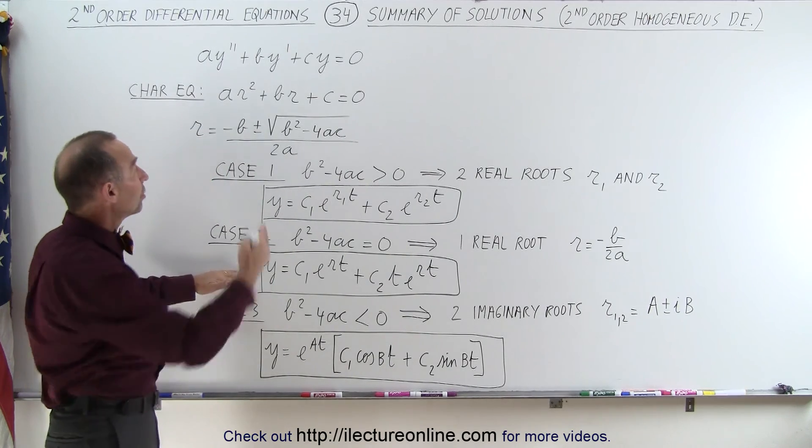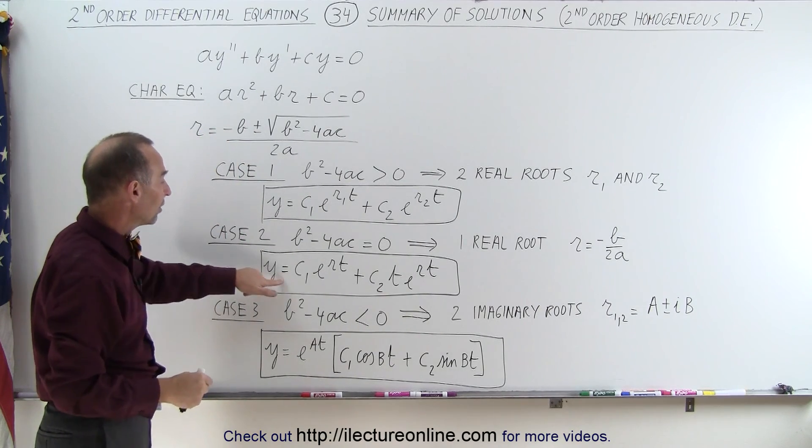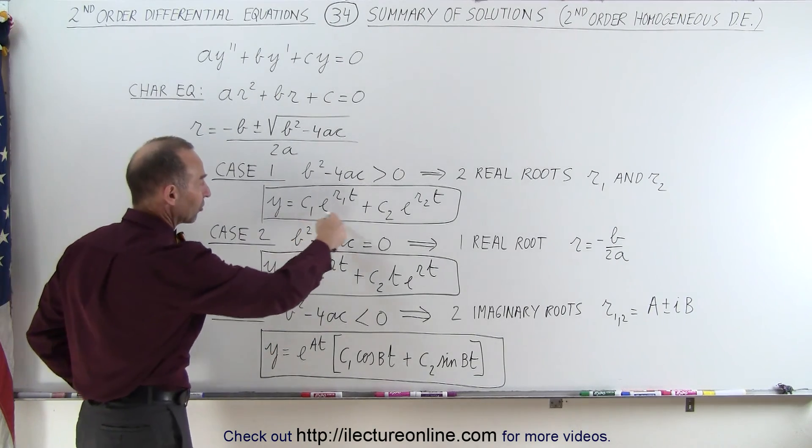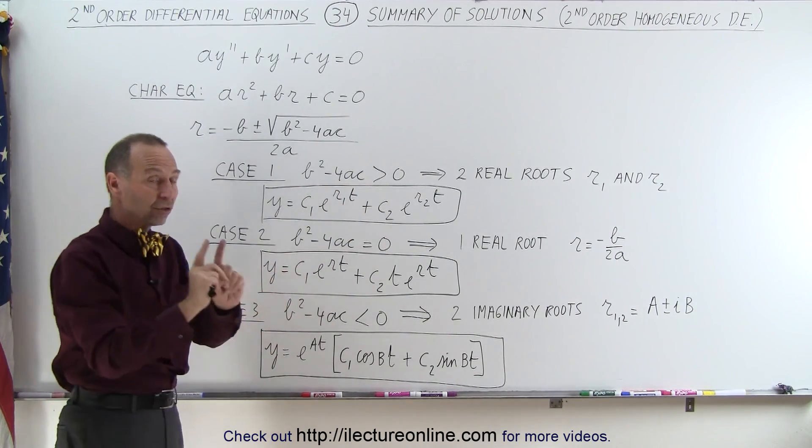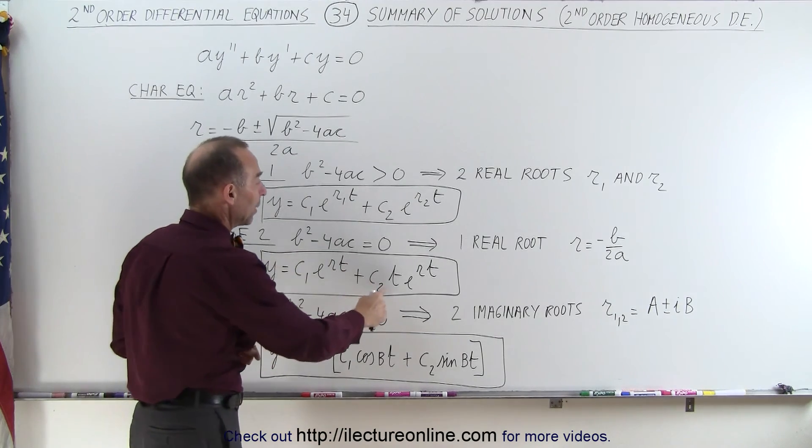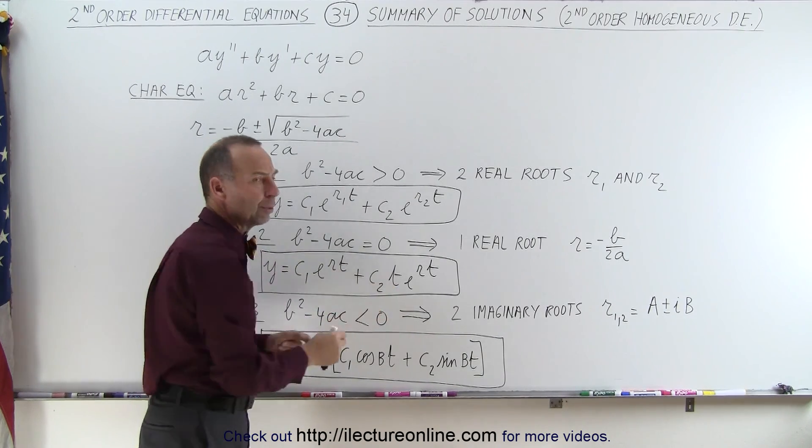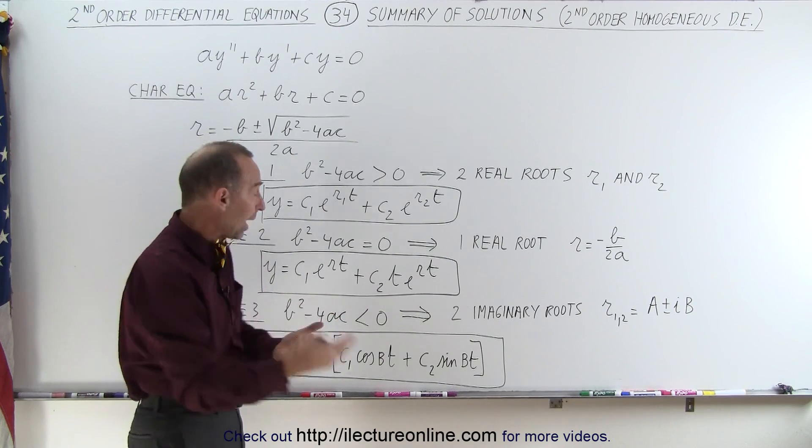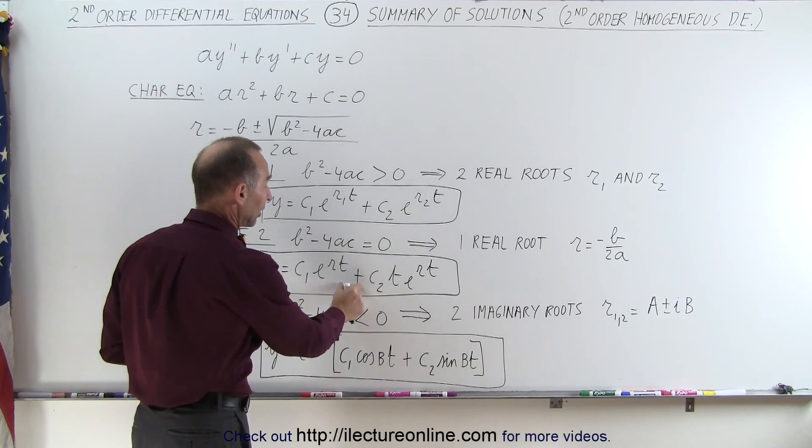Then the general solution to the differential equation, y, is equal to some constant times e^(rt), so it starts out exactly the same as before. But since there's only one root, we repeat and we have an additional t in there. Remember on the previous video, we used Abel's theorem to show you why that t is there.